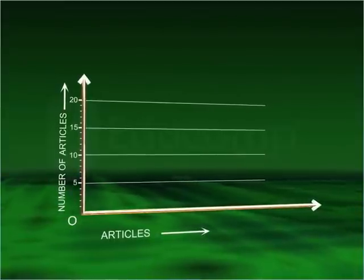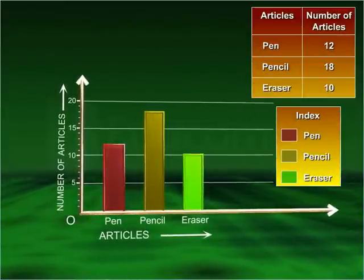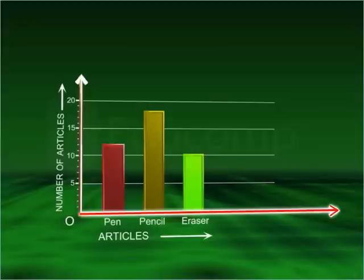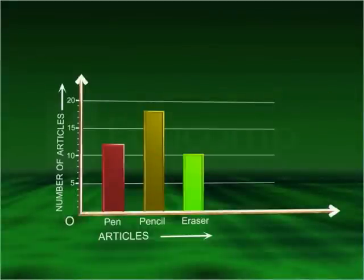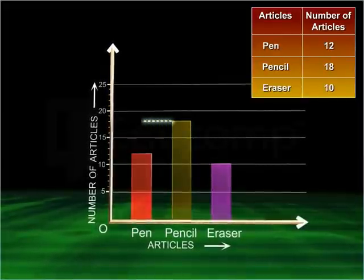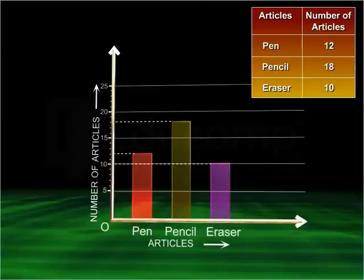Bar graphs are used to represent categorized data. To represent data using a bar graph, the different categories are shown along the horizontal line called the x-axis, usually with equal spacing between them, and the frequency of each category is shown along the vertical line called the y-axis. Then, corresponding to each category, rectangular bars of uniform width are erected vertically such that the height of the bar represents the frequency of each category.